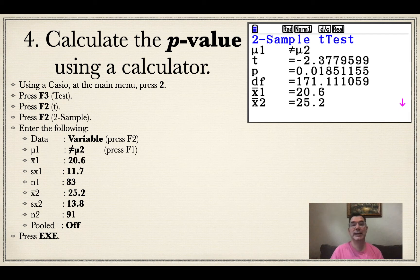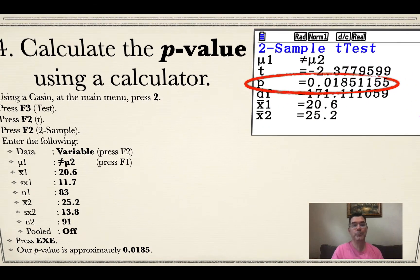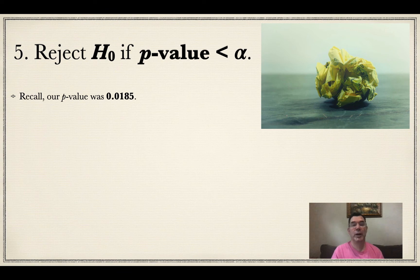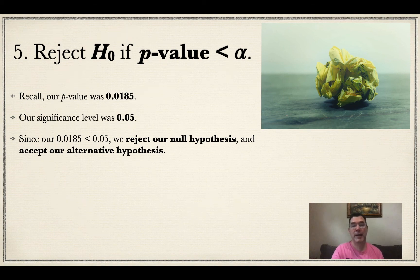Notice how my t-score was calculated and my p-value is calculated, and it's right there at .0185. Alright, so I noticed that that p-value of .0185 is less than .05, which was my alpha. So I'm going to reject my null hypothesis and accept my alternative hypothesis.